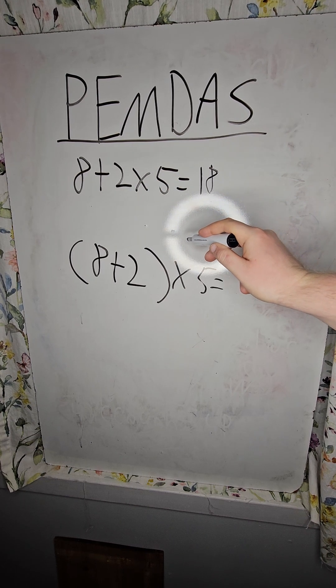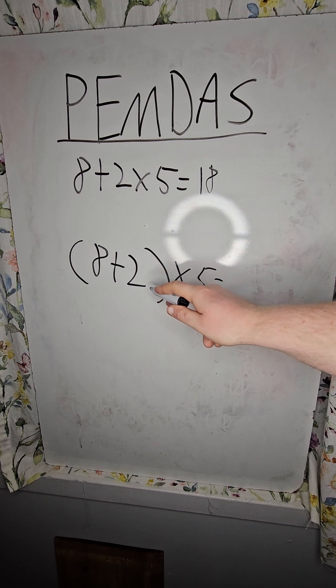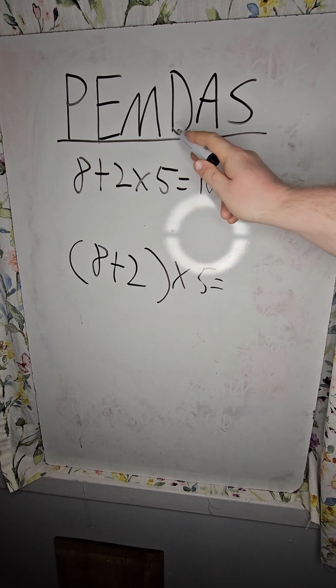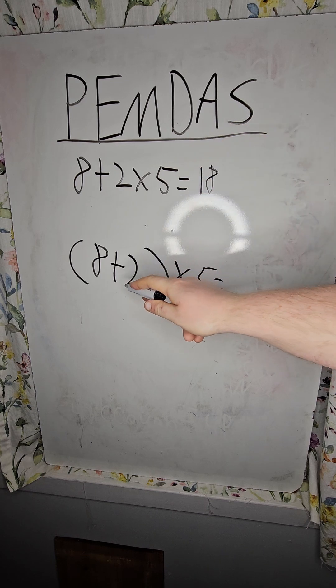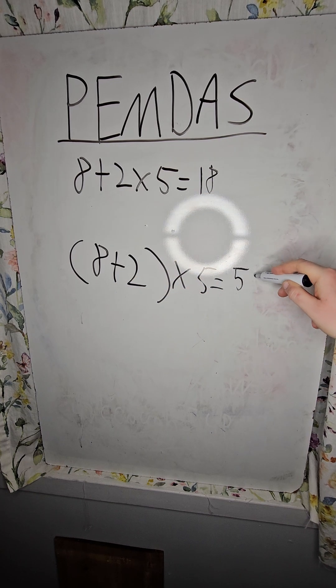But I can change that. If, for example, I put the 8 plus 2 in parentheses, parentheses comes before multiplication and addition. So 8 plus 2 becomes 10 times 5. Now it is 50.